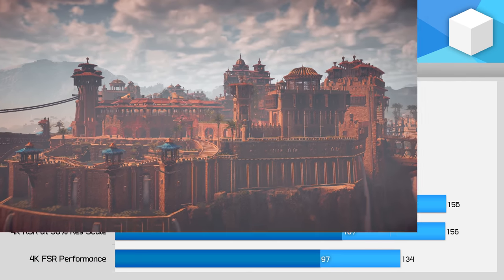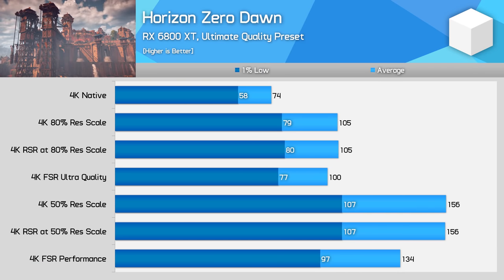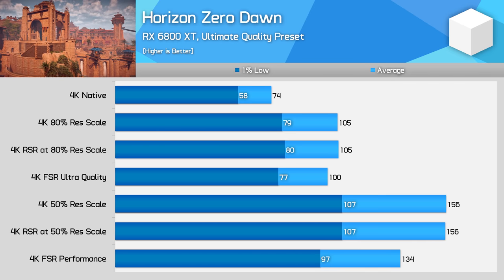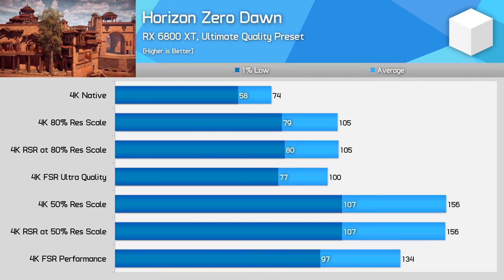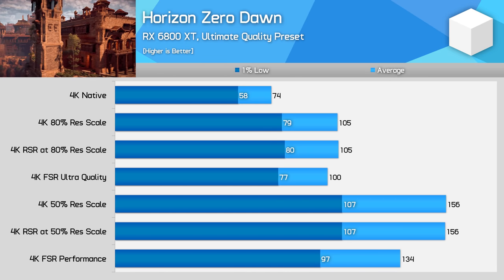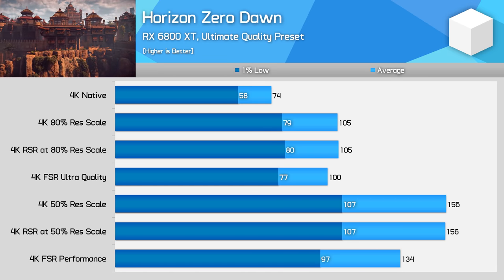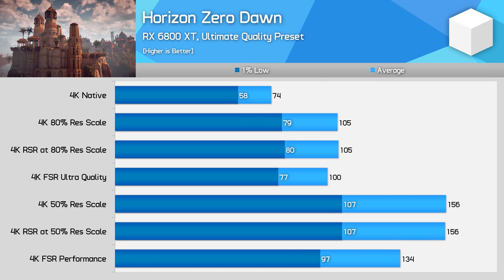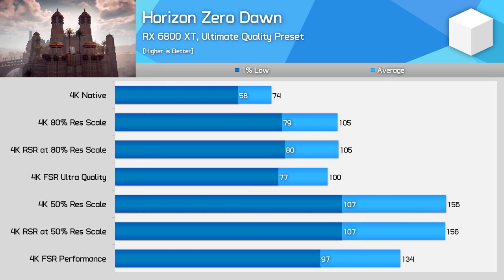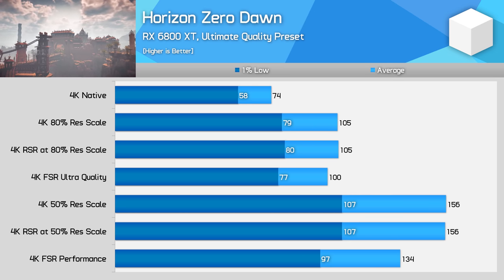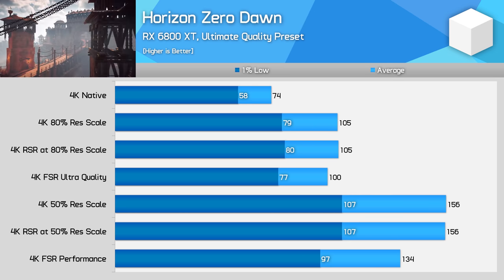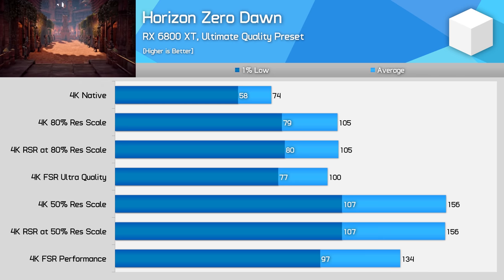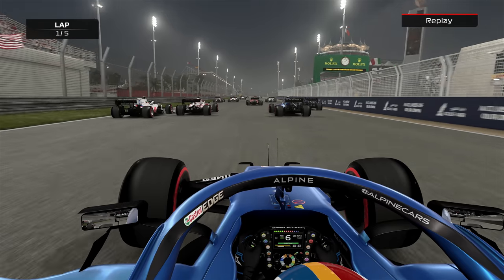How does Radeon Super Resolution perform? Starting with Horizon Zero Dawn on a Radeon RX 6800 XT, RSR actually performs a bit better than the native implementation of FSR. There is no performance hit when enabling RSR compared to running the game at the same resolution scale without RSR, whereas with FSR there is a small hit to performance at higher quality settings and a larger hit using lower quality modes. It could be related to LOD bias settings that FSR recommends, but in either case whether you go FSR or RSR, performance does improve versus native rendering.